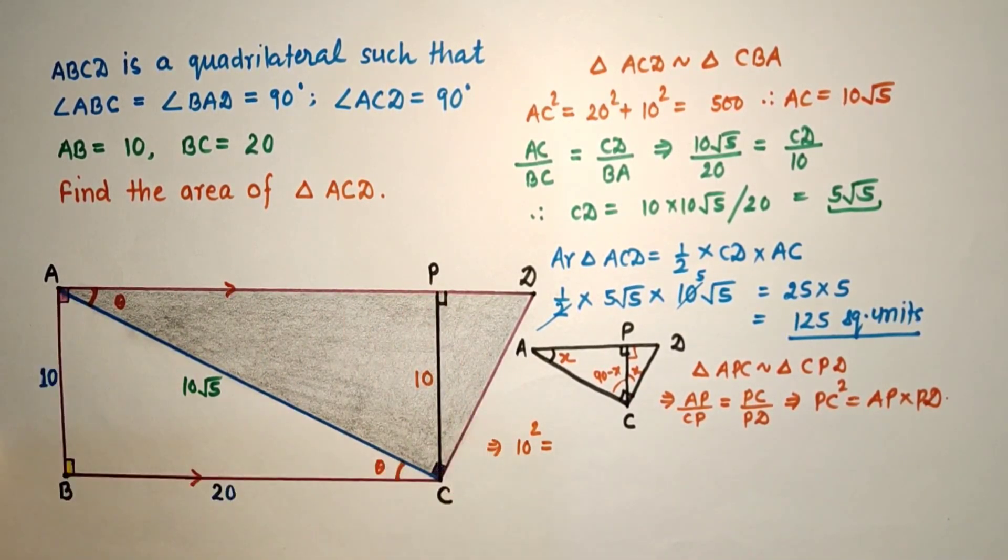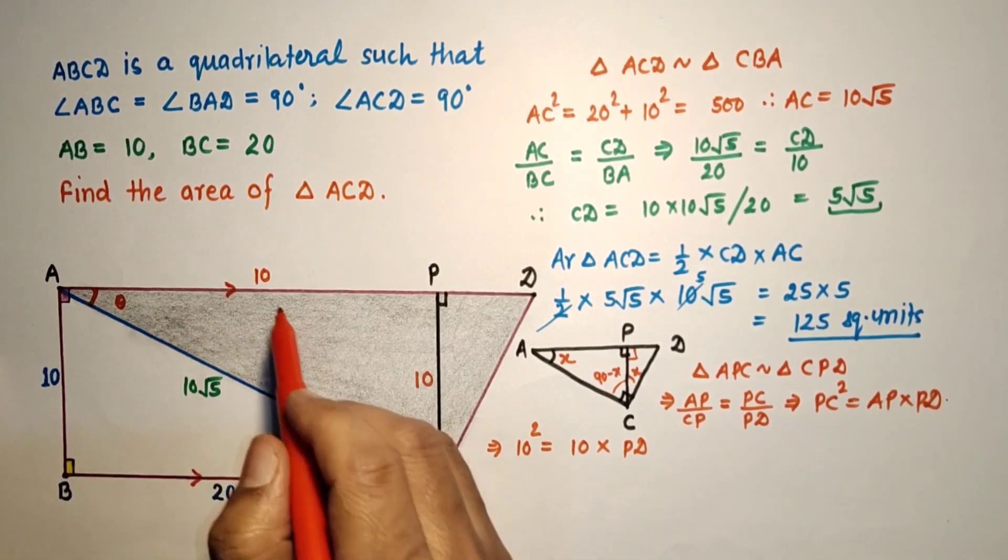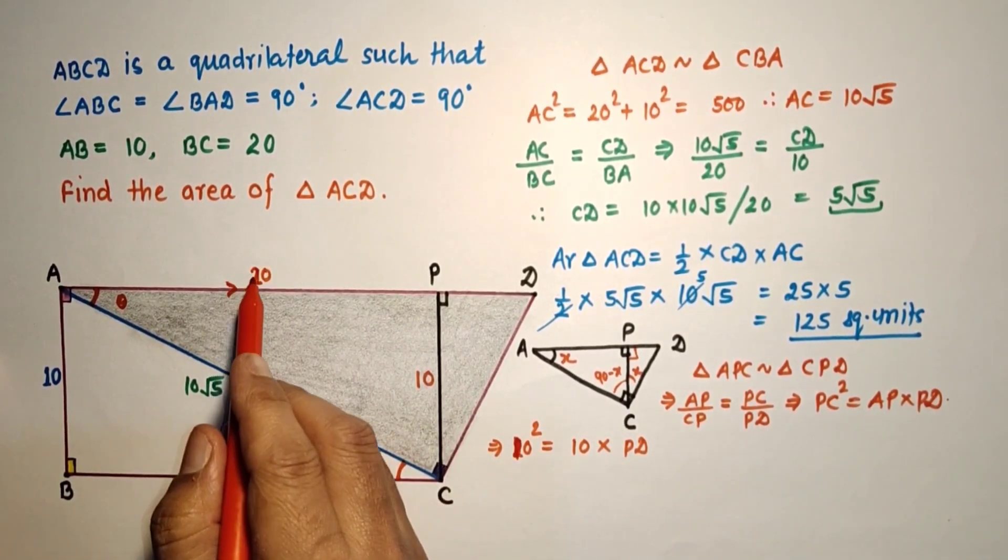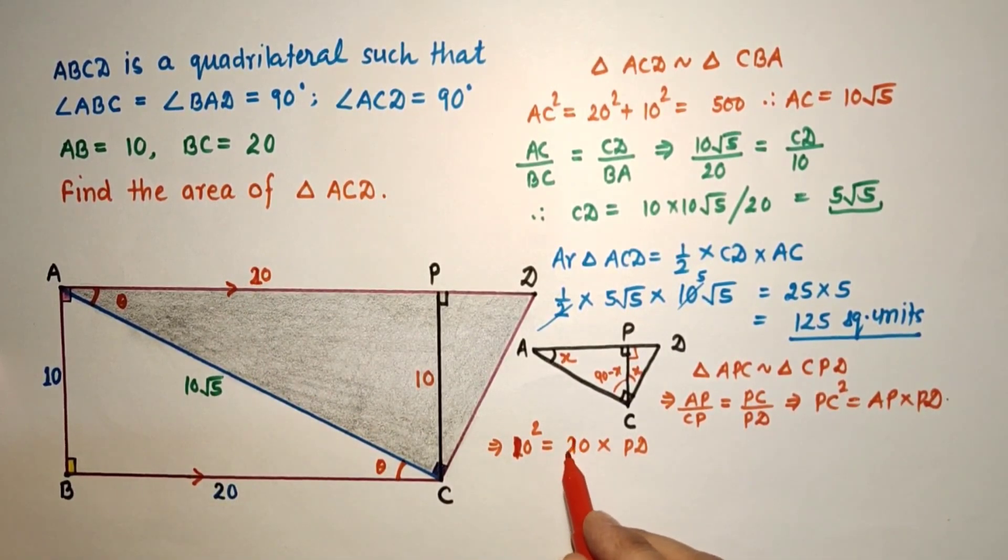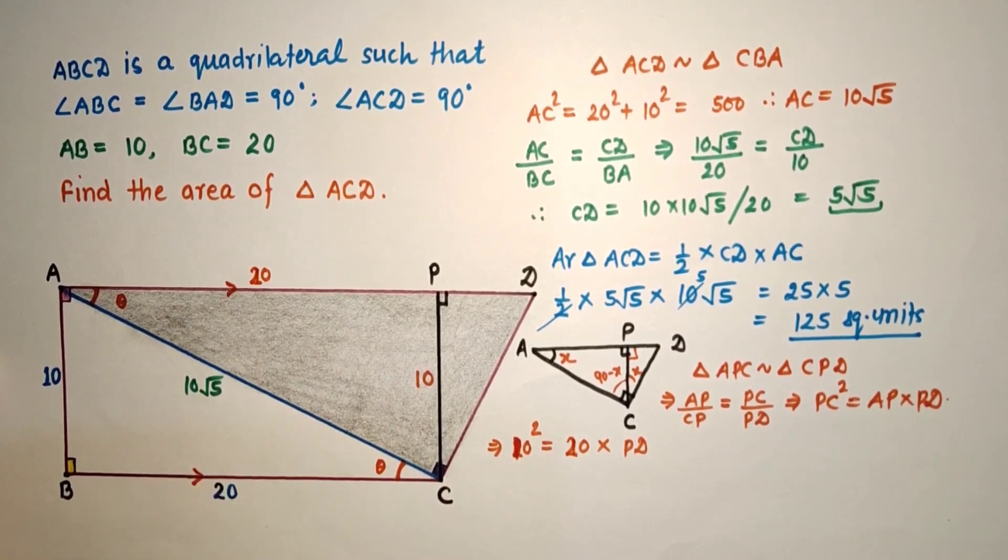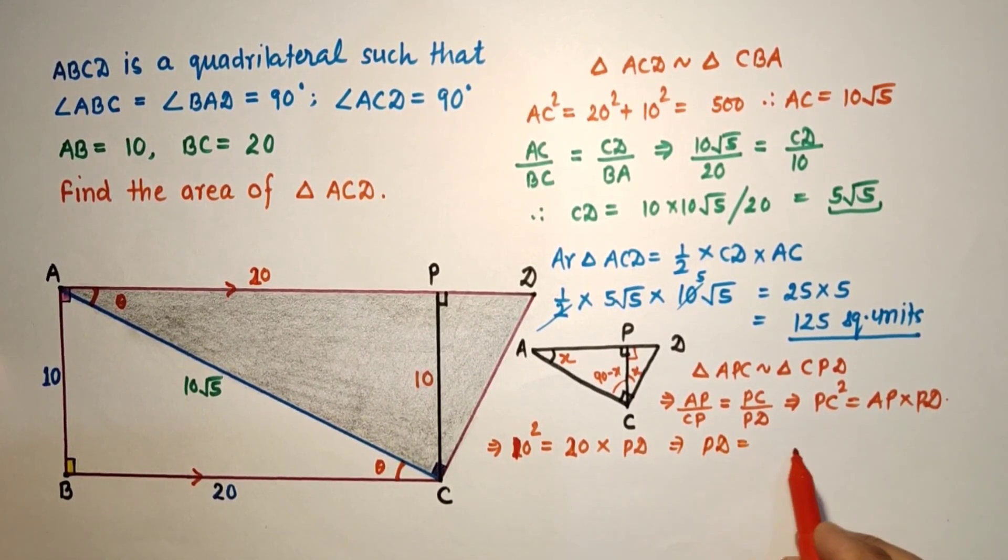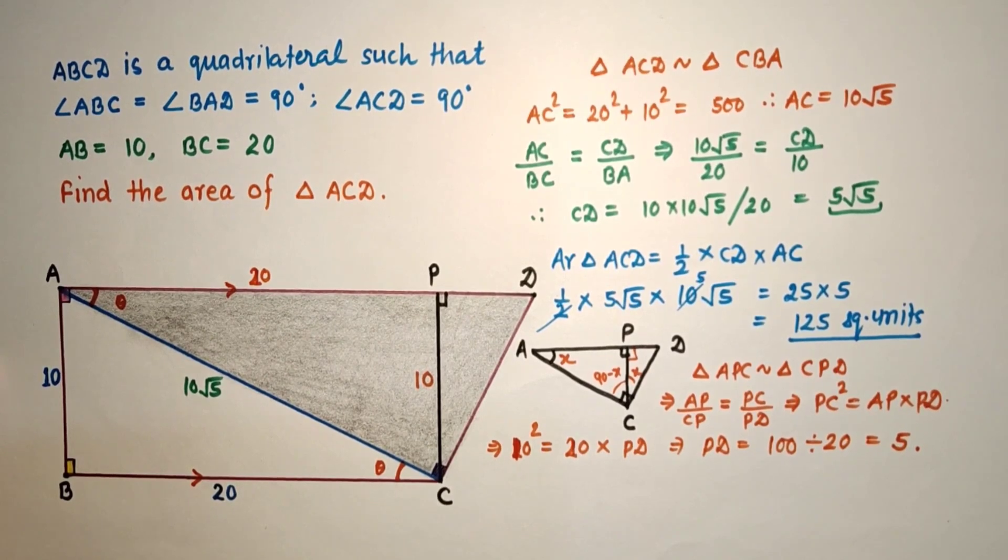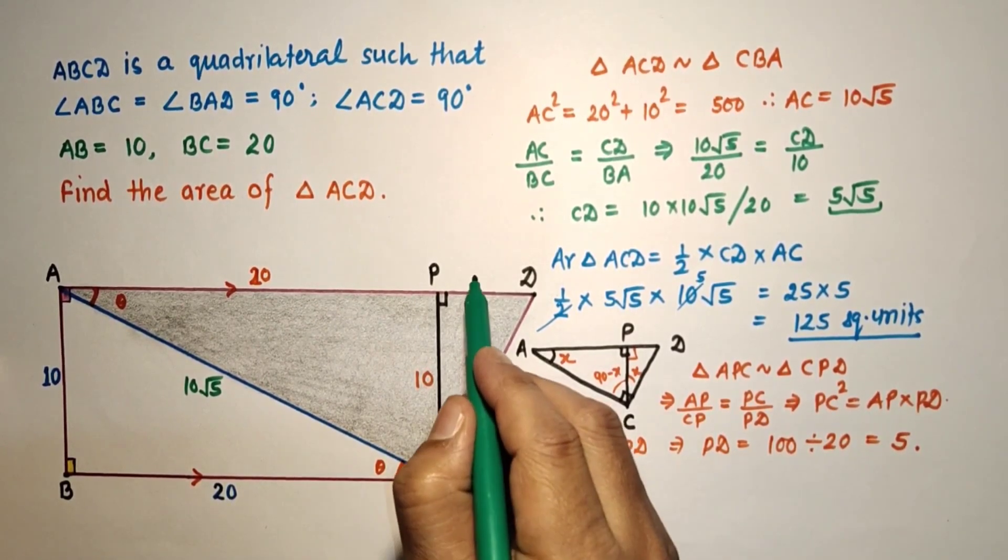10 squared, AP is 20 into PD. BC is 20, so this is 20. So 10 squared is 20 into PD. So PD equals 100 by 20, which equals 5. So this PD we found is 5.